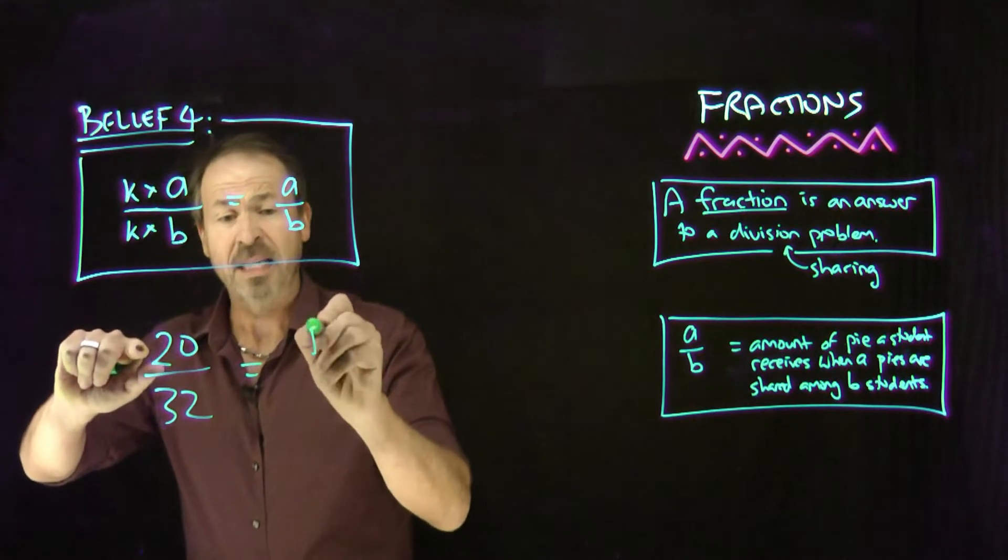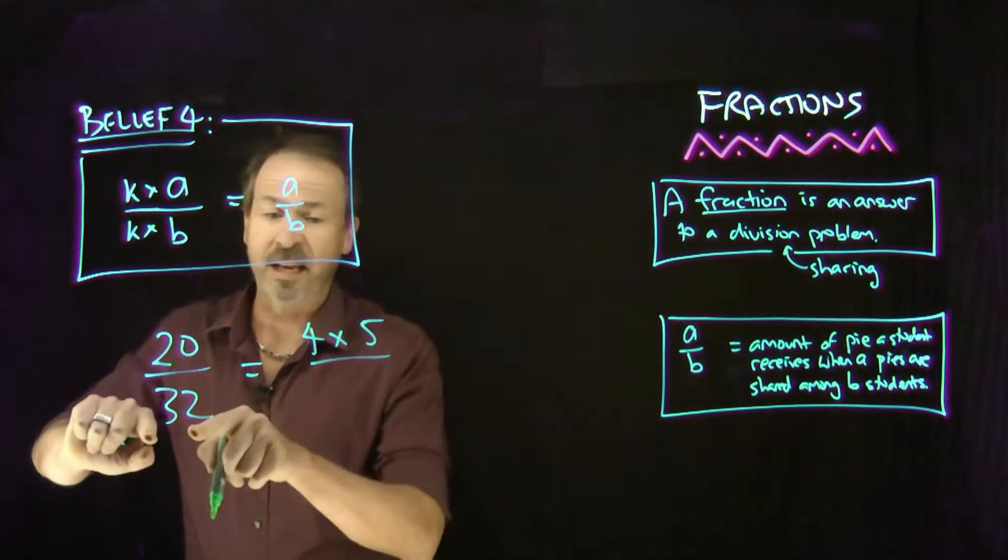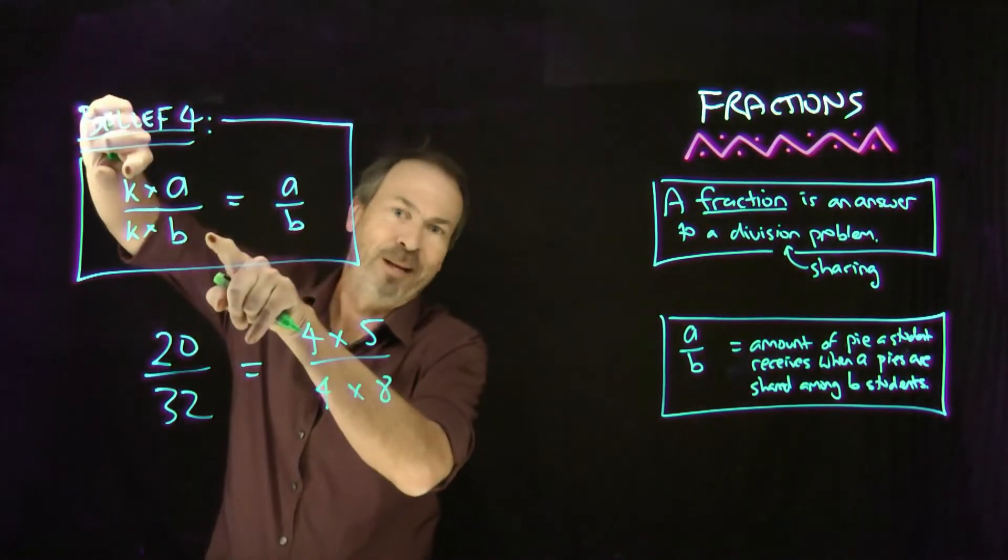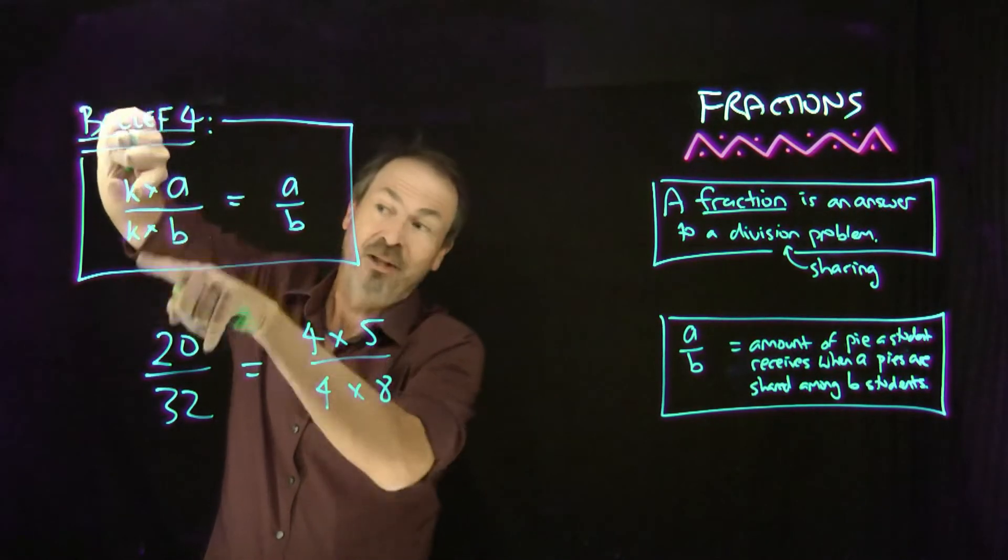And it might dawn on you, oh, I can think of 20 as 4 times 5, and I can think of 32 as 4 times 8. In which case, oh, I can apply belief number 4. See, the 4s cancel.